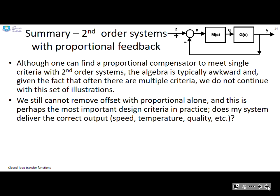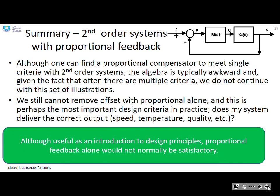A summary for second-order systems with proportional feedback: Although you can find a proportional compensator to meet single criteria with second-order systems, the algebra can be slightly awkward. Given that often there are multiple criteria, we're not going to continue with these illustrations. We still cannot remove offset with proportional alone, and this is probably the most important design criteria in practice because you want your system to deliver the correct output. Although proportional feedback alone is useful as an introduction to design principles, in general, proportional feedback alone is not going to be satisfactory.